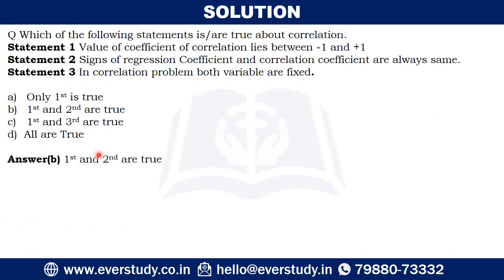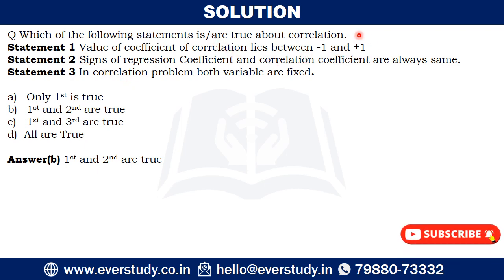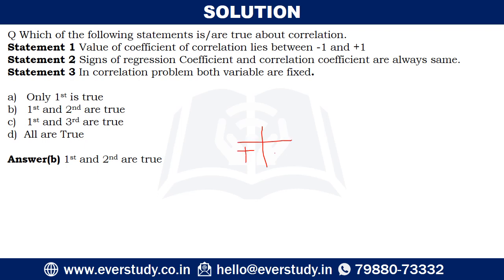The correct answer is B — first and second are true. The value of coefficient of correlation lies between minus one and plus one; this is a well-known property of correlation. Second, signs of regression coefficient and correlation coefficient are always the same — this is also correct. That's why B is the correct answer.